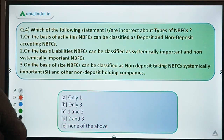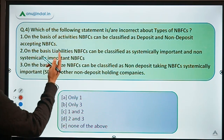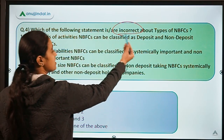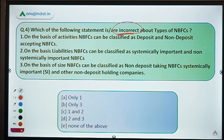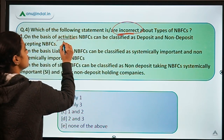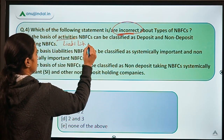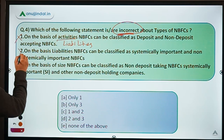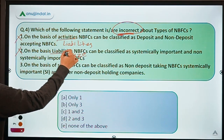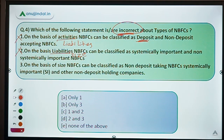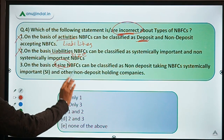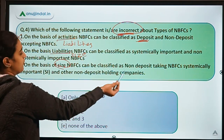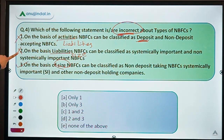Moving back to the question: we have to identify the incorrect statements about types of NBFCs. The first statement says: on the basis of activities, NBFCs can be classified as deposit and non-deposit accepting. This is wrong — that classification is on the basis of liabilities. The second statement says: on the basis of liabilities, NBFCs can be classified as systemically important and non-systemically important. This is also wrong — that is the classification on the basis of size. The third statement — on the basis of size, NBFCs can be classified as non-deposit taking systemically important and other non-deposit holding companies — is correct. So incorrect ones are first and second; the answer is option C.